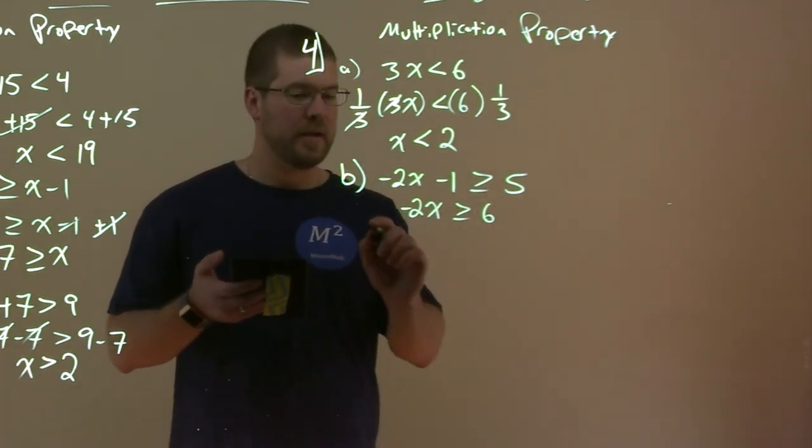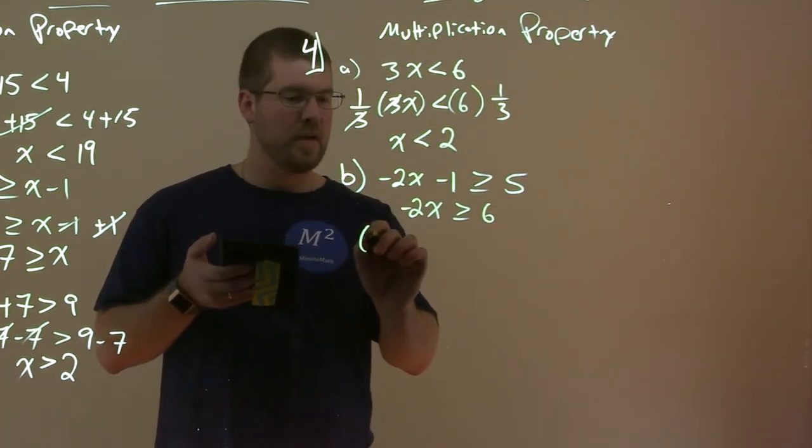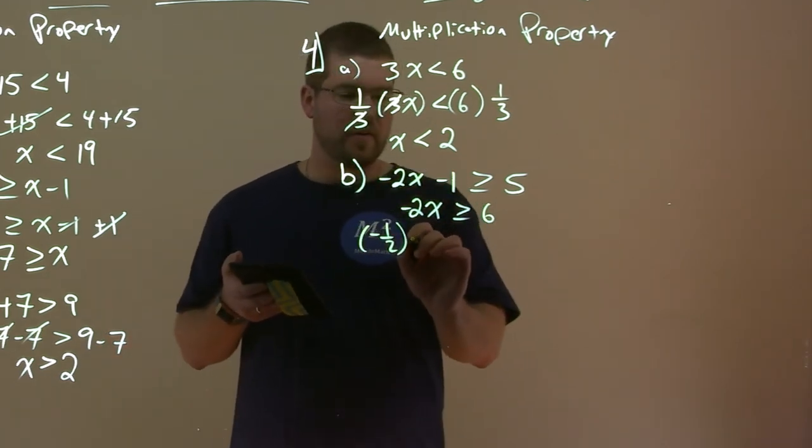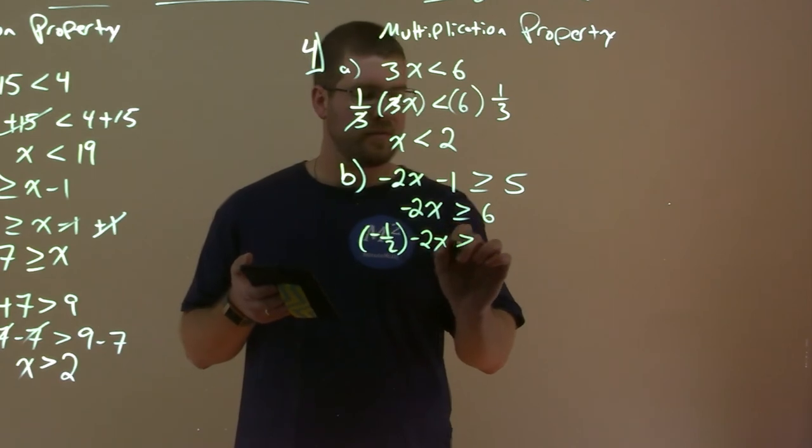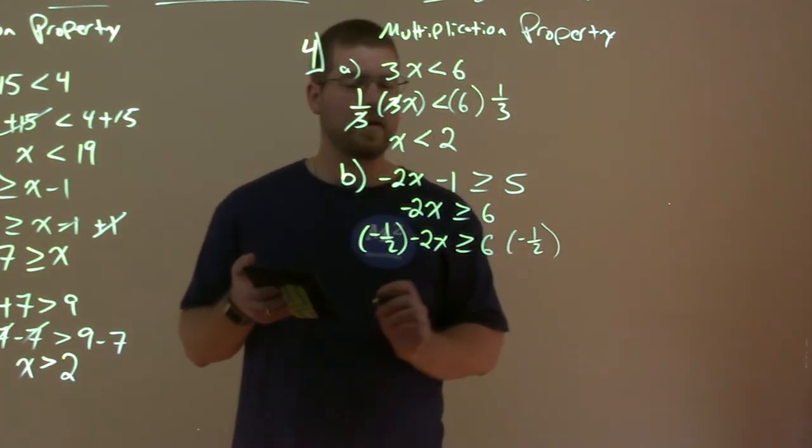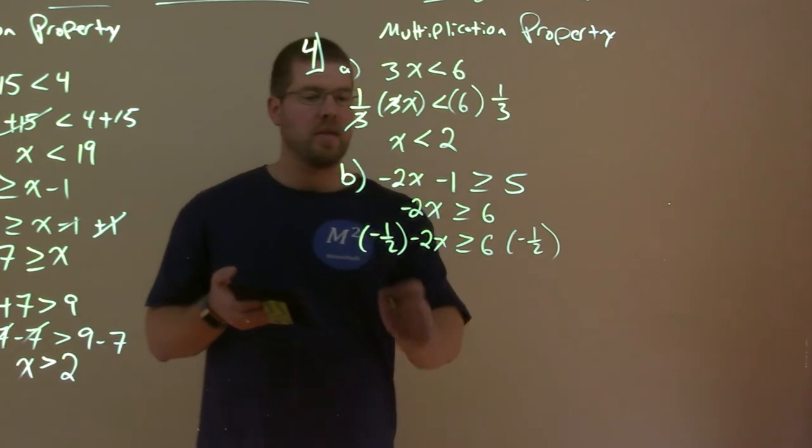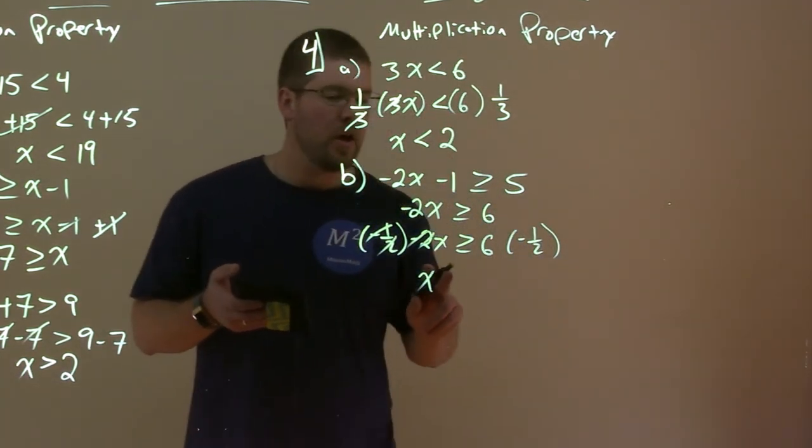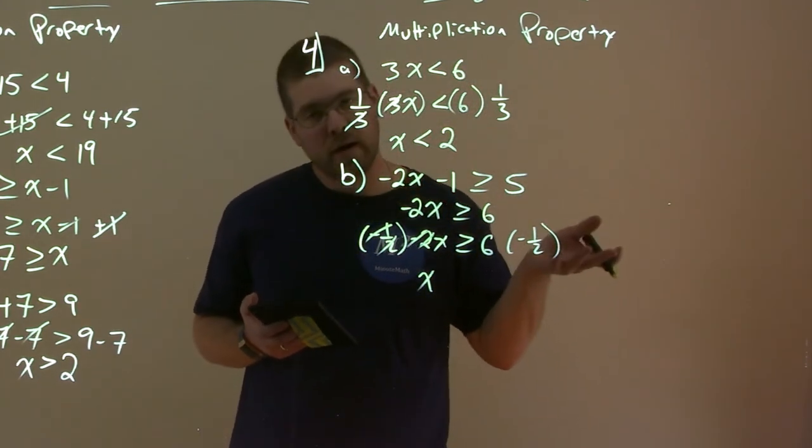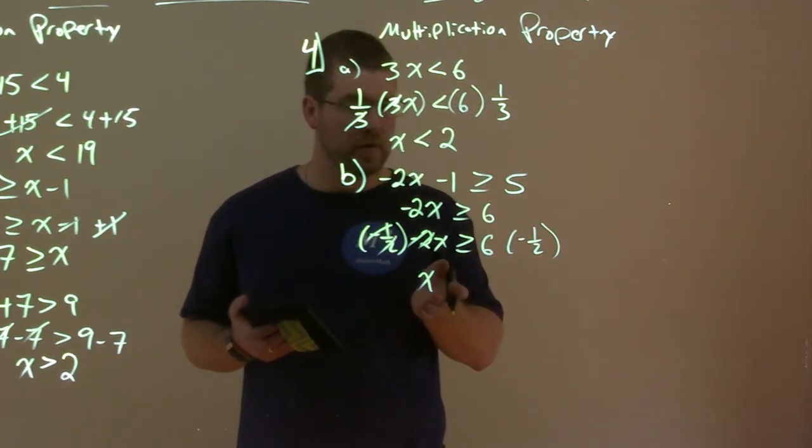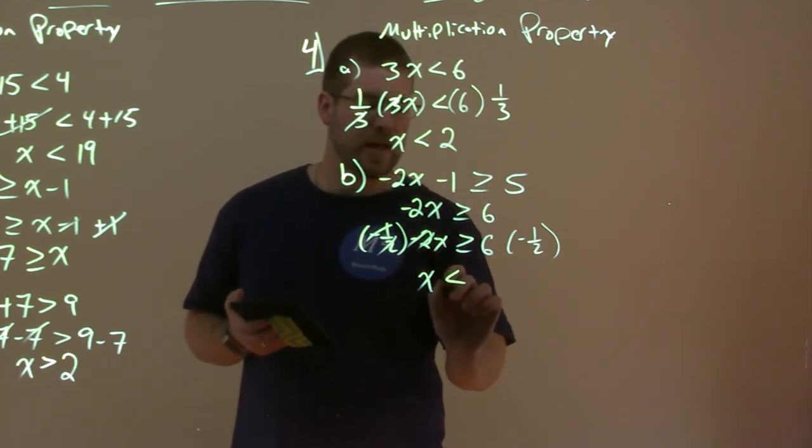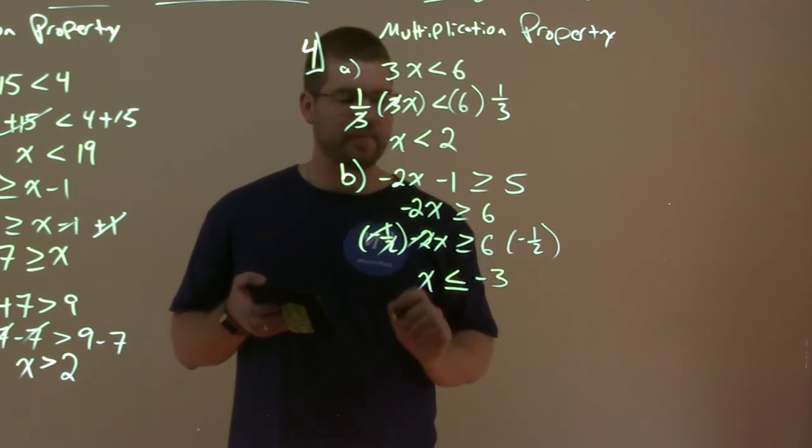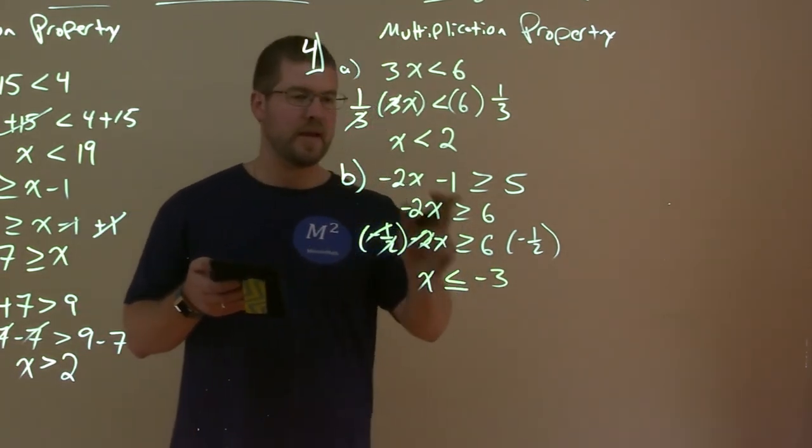So now we have negative 2X. To eliminate that, we're multiplying both sides by negative 1/2, the reciprocal there. So we have negative 2X here, multiply both sides by negative 1/2. The negative 1/2 has to cancel, giving us an X. But here's the kicker. When we multiply over an inequality or divide by a negative number, we have to flip the sign. So X is now less than or equal to 6 times negative 1/2, which is negative 3. And there we have it. X is less than or equal to negative 3.